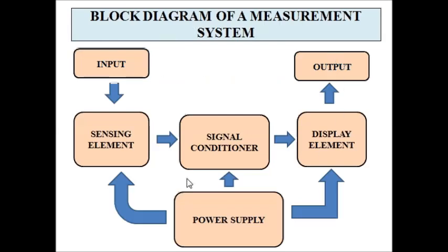Looking again at the basic block diagram of a measurement system: we have the sensor which senses or detects the physical parameter under measurement and converts it into a suitable electrical output — which can be voltage, current, or change in resistance, inductance, and capacitance. That electrical output is fed to the signal conditioner which amplifies it, filters out noise signals, performs bandwidth adjustment through frequency response matching, and linearizes the output. Then it is fed to a display element which provides a visual, graphical, or three-dimensional representation of the physical parameter. The power supply unit provides the necessary power for proper functioning to the sensors, signal conditioners, and display element.